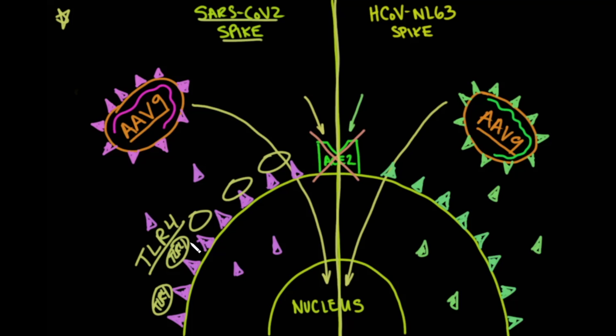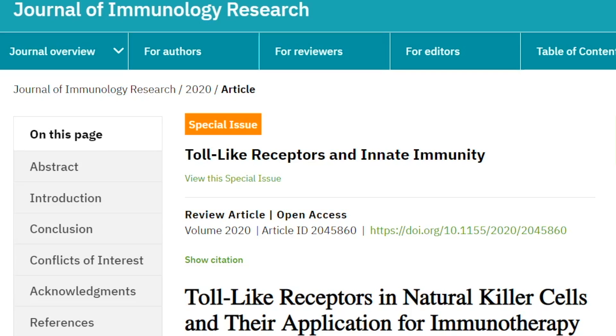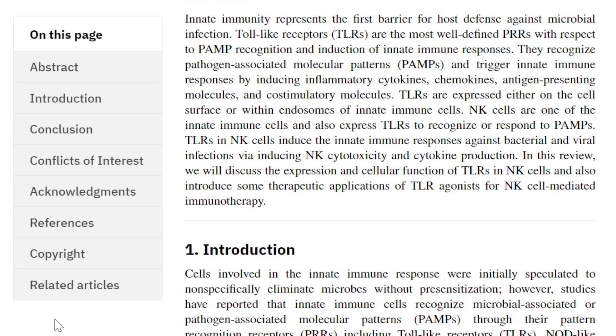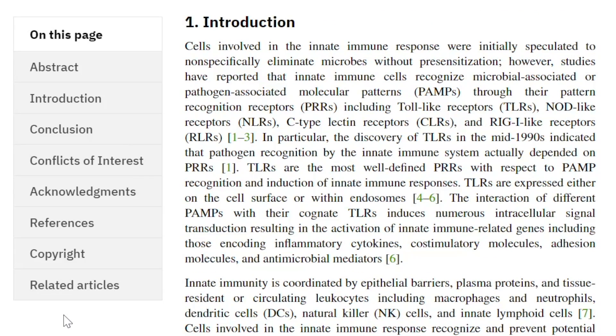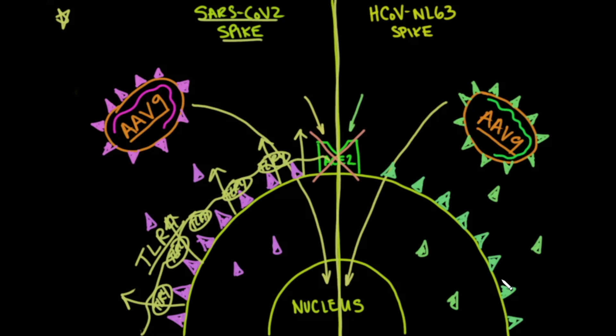In addition to all of these toll-like receptor 4s, there was a lot of inflammation and also enlargement of these cells. So the cells grew in size, became dysfunctional, and also became inflamed. And if you want to read more about toll-like receptors in natural killer cells and their application for immunotherapy and some basic information about this, you can read here in this article, which we'll put a link to in the description below. So, but just to satisfy some of your curiosity here, you can see that cells involved in the innate immune system response were initially speculated to be nonspecific eliminate microbes without presensitization. However, studies have reported that the innate immune cells recognize microbial-associated or pathogen-associated molecular patterns.